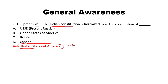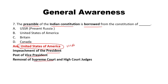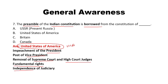Other provisions borrowed from the USA constitution include: impeachment of the President, post of Vice President, removal of Supreme Court and High Court judges, fundamental rights, independence of judiciary, and judicial review. All these provisions are borrowed from the USA constitution.